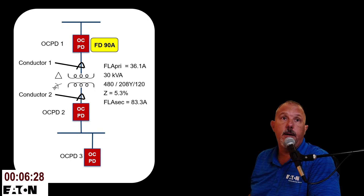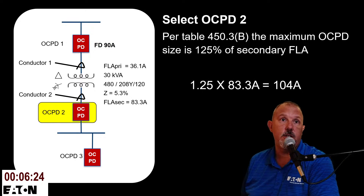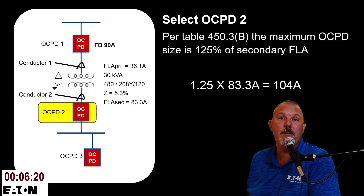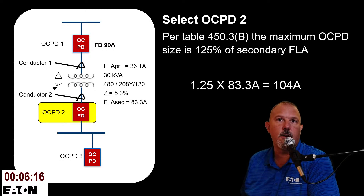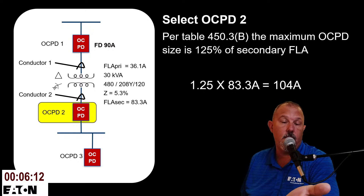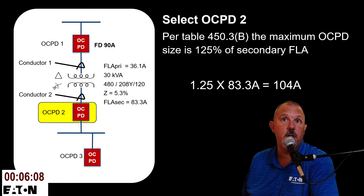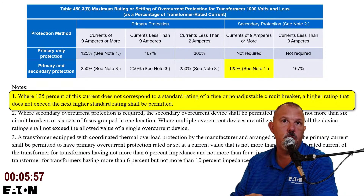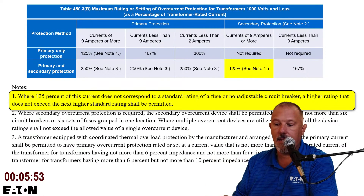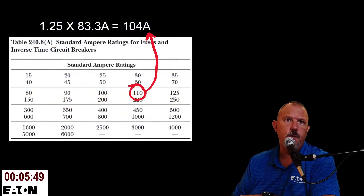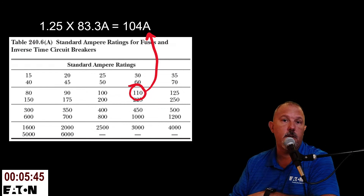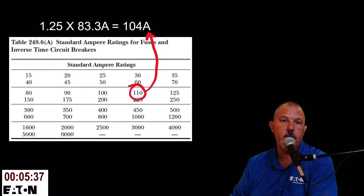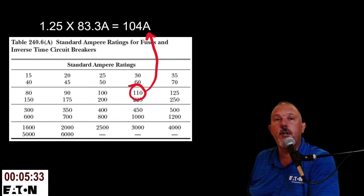We've picked the primary OCPD — anywhere from 45 to 90 amps works. Now for the secondary OCPD per 450.3(B): 1.25 times 83.3 amps equals 104 amps. Because 125% doesn't correspond to a standard ampere rating, per the footnote we can go to the next higher standard rating, which is 110 amps per Table 240.6. In this example I chose a 100-amp panelboard with a 100-amp OCPD, but 110 amps is permissible.